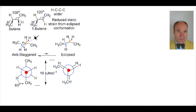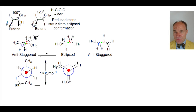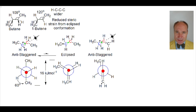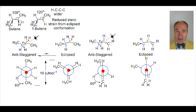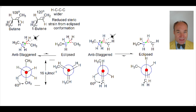What about the butene case? Here is the anti-staggered conformation viewed down carbon two (red) to carbon three (blue) in Newman projection. Upon anti-clockwise rotation about the 2,3 carbon-carbon bond by 60 degrees, the eclipsed conformation is generated, and it is more abundant than the anti-staggered conformation. This is due to the wider angle in butene — the eclipsed conformation is lower in energy by 5.5 kilojoules per mole compared to the anti-staggered conformation.